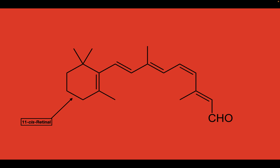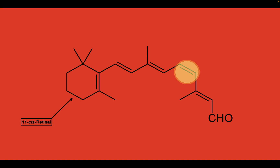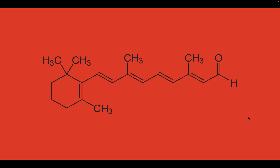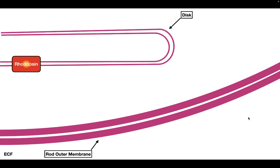11-cis-retinal is a derivative of vitamin A, and it's going to be the molecule that changes in response to light. When the photon is absorbed by rhodopsin and it interacts with 11-cis-retinal, it causes this molecule to basically turn and produce all-trans-retinal. It's this conversion that's going to initiate the signal transduction process. When you have this conversion take place, it causes a conformational change in rhodopsin, which produces metarhodopsin-2.